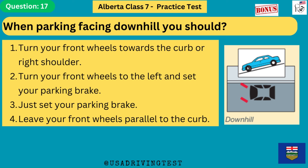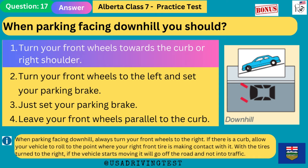When parking facing downhill you should: 1. Turn your front wheels towards the curb or right shoulder. 2. Turn your front wheels to the left and set your parking brake. 3. Just set your parking brake. 4. Leave your front wheels parallel to the curb. The answer is 1: turn your front wheels towards the curb or right shoulder. When parking facing downhill, always turn your front wheels to the right. If there is a curb, allow your vehicle to roll to the point where your right front tire makes contact with it. With the tires turned to the right, if the vehicle starts moving it will go off the road and not into traffic.